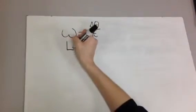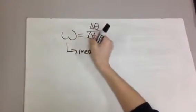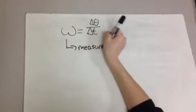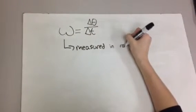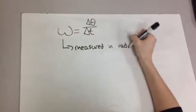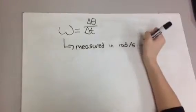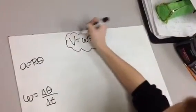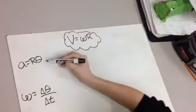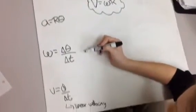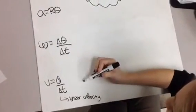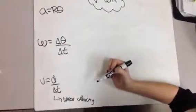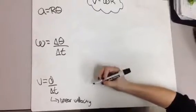Angular velocity is measured in radians per second. We'll derive the equation v equals omega r by using arc length, angular velocity, and linear velocity, which is just the distance covered over the amount of time it takes to cover that distance.